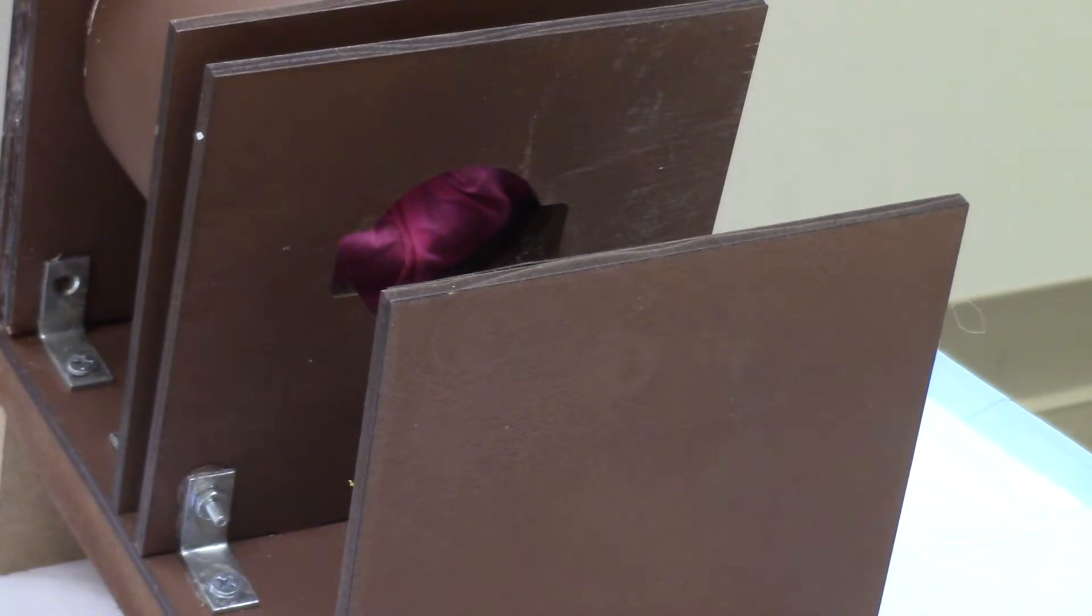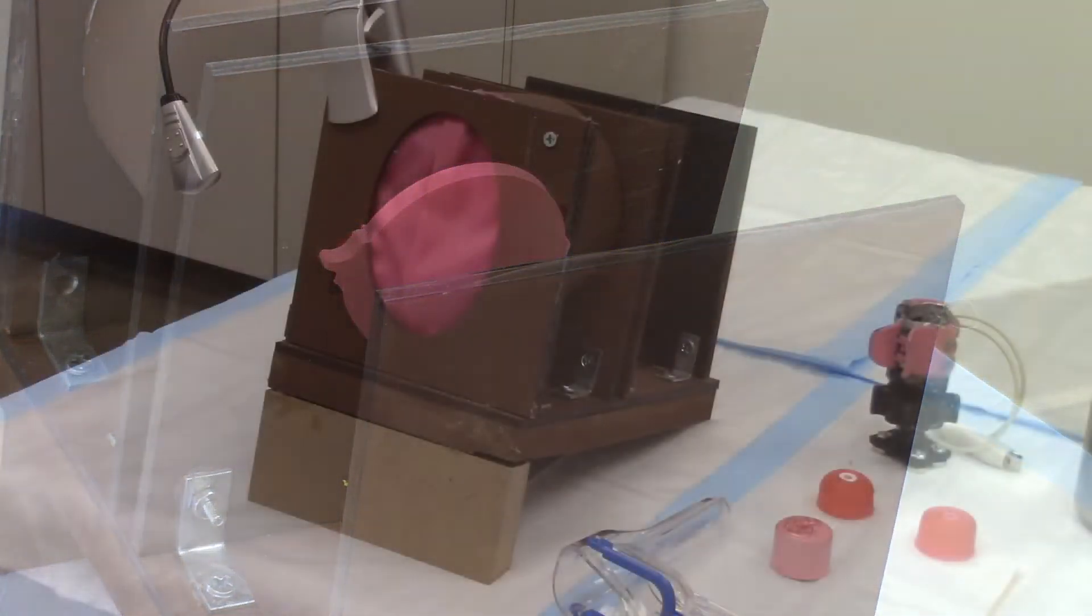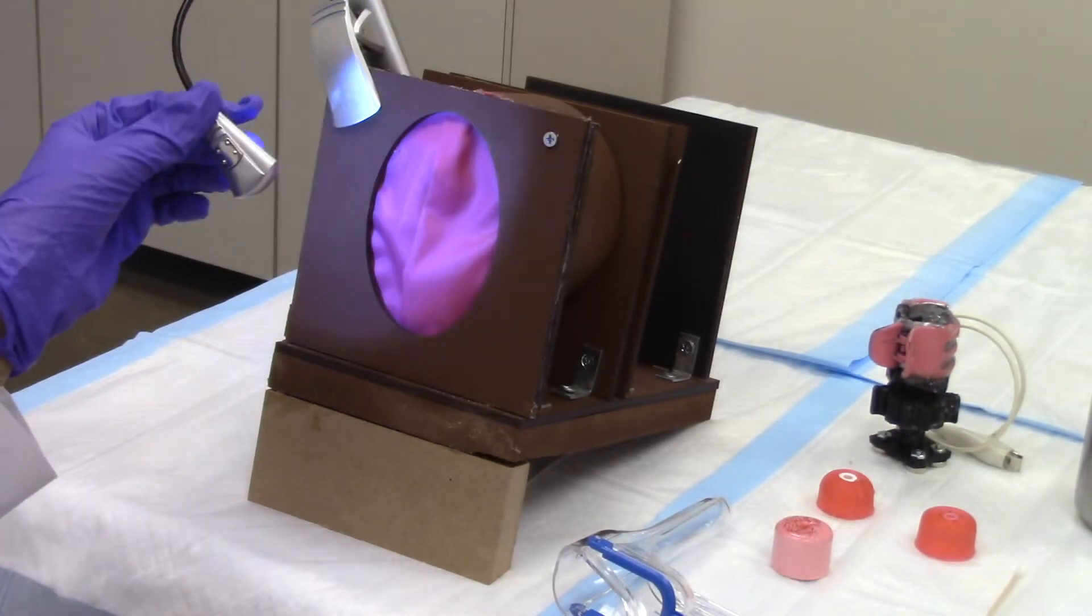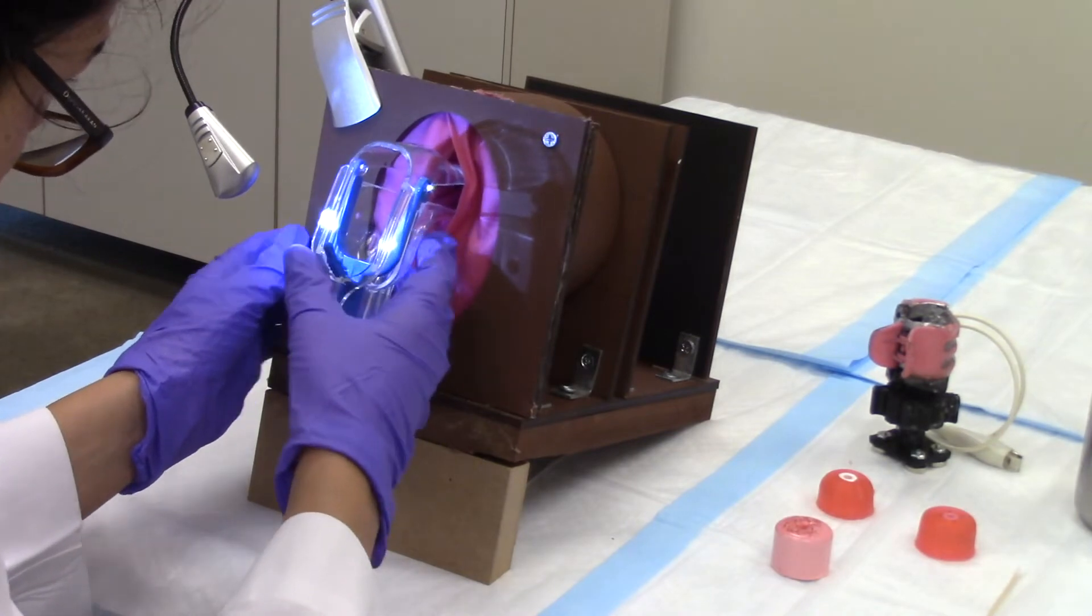Once the model is in the holder, the holder can be installed in the back of the pelvic frame by twisting and locking in place. Once the cervical model is in place, the plastic speculum is inserted into the pelvic frame and opened to visualize the cervix.